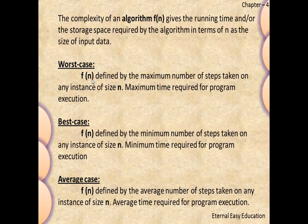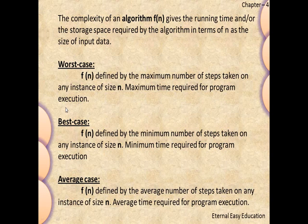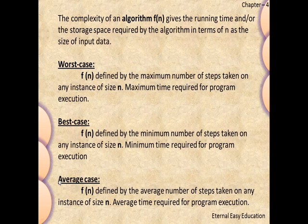Now we will learn the fundamental cases. f(n) is defined where n is the size of the input and f defines the running time or storage space required by the algorithm. In the worst case, the maximum number of steps is taken or maximum time is required for execution. In the best case, the minimum number of steps is taken or the minimum time is required. The average case is defined by the average number of steps taken on an instance of size n. An algorithm using maximum time is worst case; using minimum time is best case; using average time is average case.